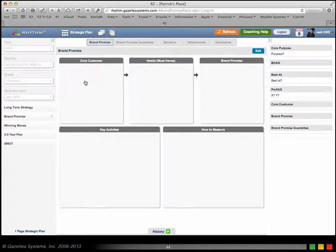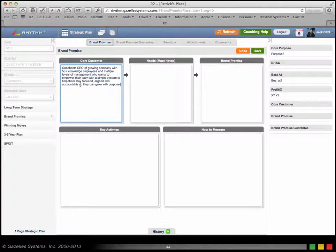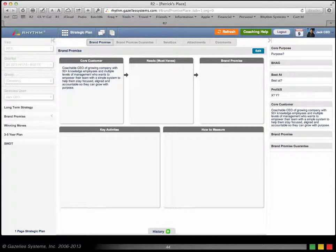I'm going to show you how to work on your core customer, their needs, and their brand promise. You can click in any of these squares and type it out. I'm just giving you an example. This is an example of a core customer, and then you continue on to their needs and their brand promise. Hit Save, and you're good to go.